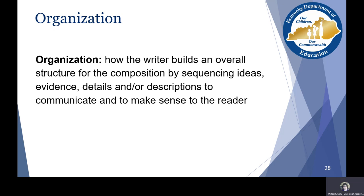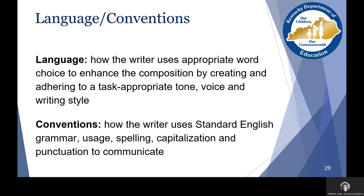With the scoring element of organization, we're looking at how the writer builds an overall structure for the composition by sequencing ideas, evidence, details, and/or descriptions to communicate and make sense to the reader. Language looks at how the writer uses appropriate word choice to enhance the composition by creating and adhering to a task-appropriate tone, voice, and writing style. Conventions looks at how the writer uses standard English grammar, usage, spelling, capitalization, and punctuation to communicate.